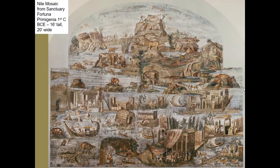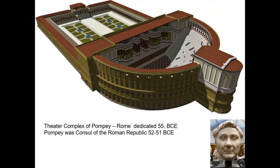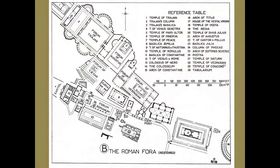From the Sanctuary of Fortuna Primigenia we have recovered a fair amount of decoration, including the Nile Mosaic, which is terraced in appearance similarly to the building itself and shows increased naturalism in depictions of animals found along the Nile — hippopotami, crocodiles — as well as human figures in battle and hunting scenes. We also see this combination of wide open spaces and half-circular spaces in a theater complex reconstruction directed by Pompey, who served as consul alongside Caesar.